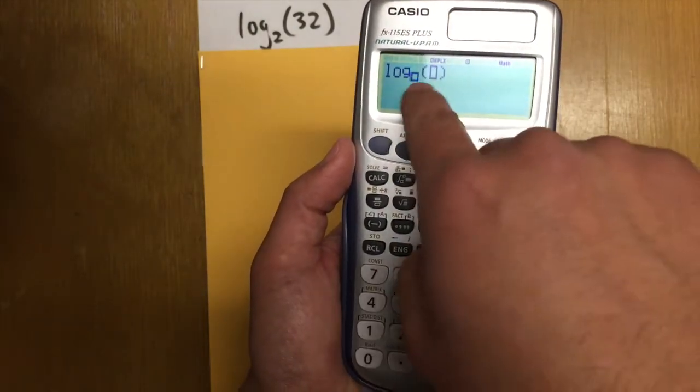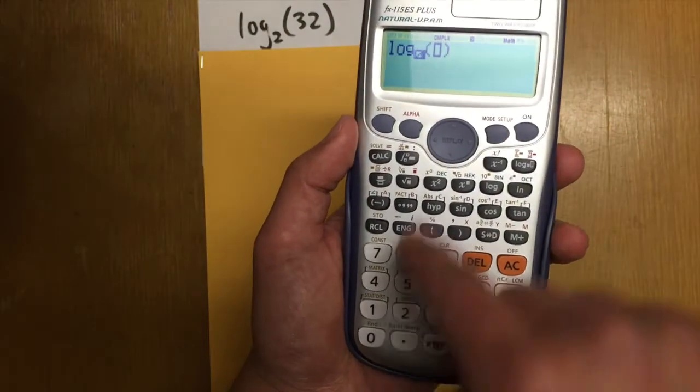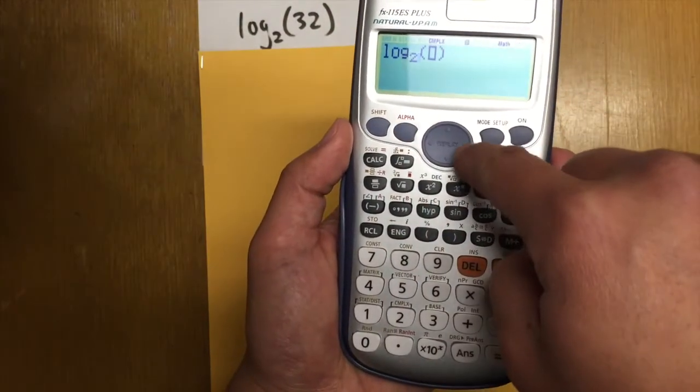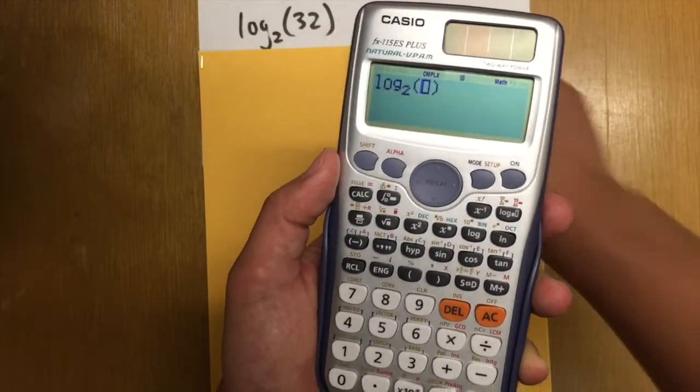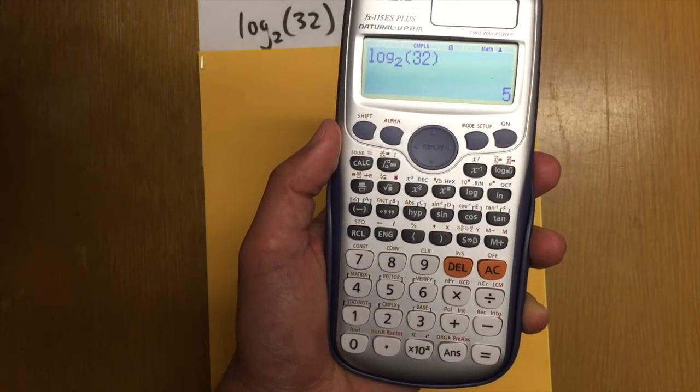And this will allow you to enter any base for the log. I want to have base 2. So just put a 2 right here. And then press right so we can get into the parentheses. And then enter 32. And we are done. The answer to this is 5.